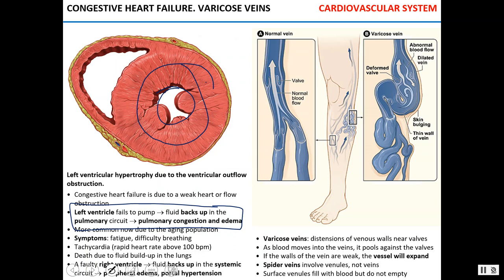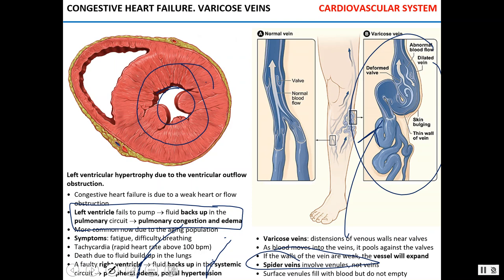If the right ventricle fails, fluid backs up in the systemic circuit, leading to edema in peripheral tissues and portal hypertension. Varicose veins occur when the walls of the veins are abnormally distended, usually in people with sedentary lifestyles where blood pools near the valves, causing walls to stretch and vessels to expand and become oddly shaped. Varicose veins are not necessarily intrinsically dangerous and doctors usually recommend leaving them alone. Spider veins are the same condition but affecting venules — smaller vessels.